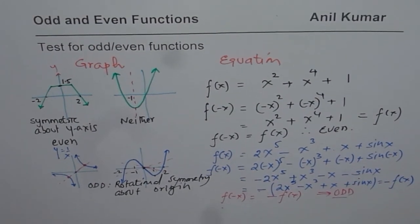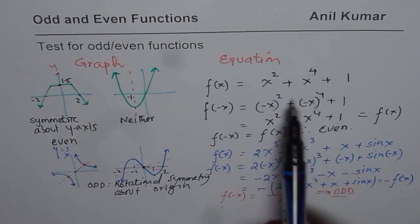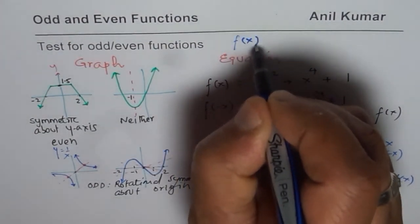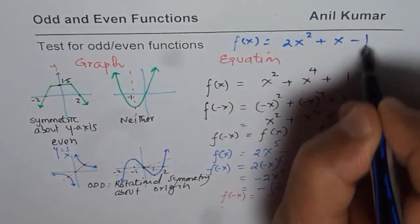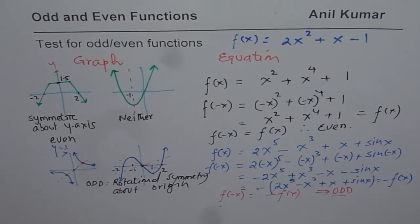That is how algebraically we can test whether a function is even or odd. Remember, in any equation if you combine odd and even terms then the function will be neither. Here is a function for you to test: 2x squared plus x minus 1 — decide whether this function is even, odd, or neither. That is an exercise for you. I hope this helps you understand how to test for even and odd functions. Thank you and all the best.